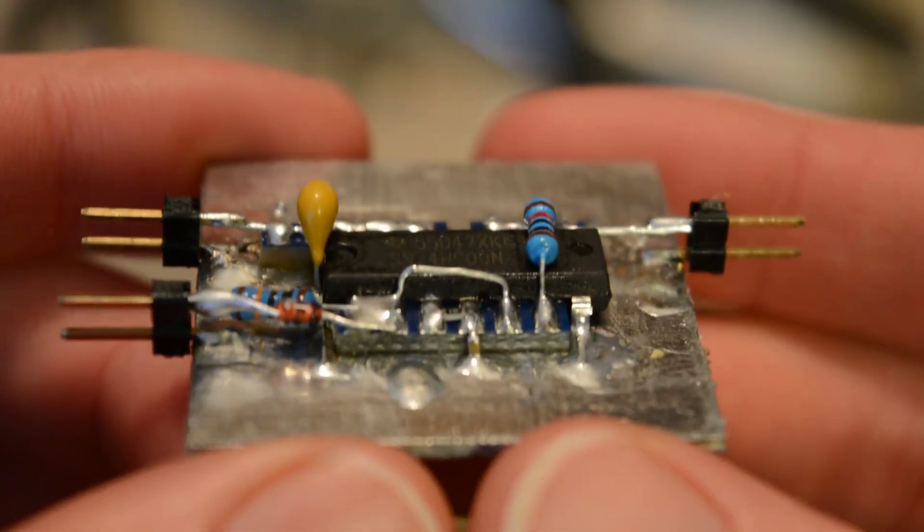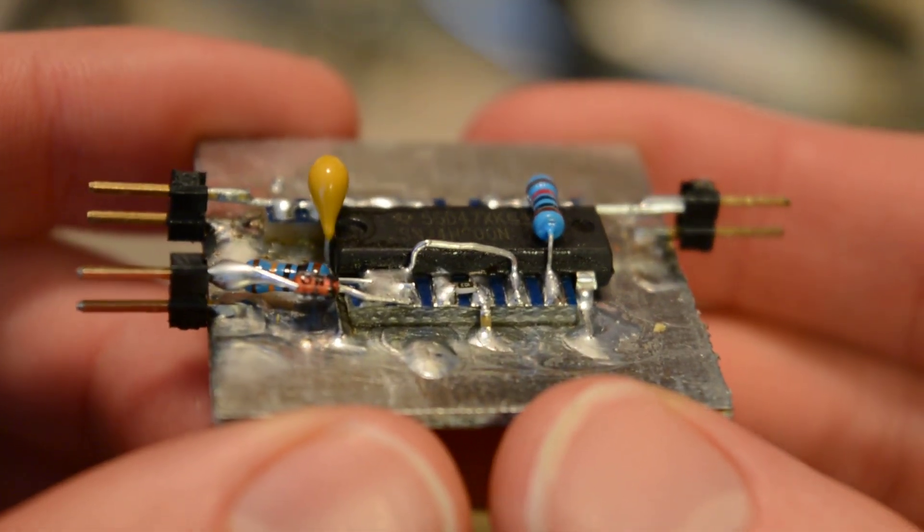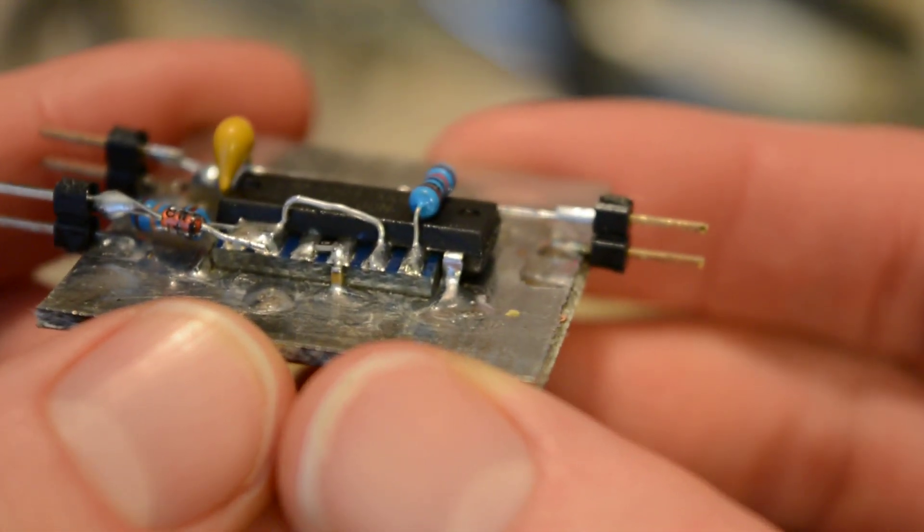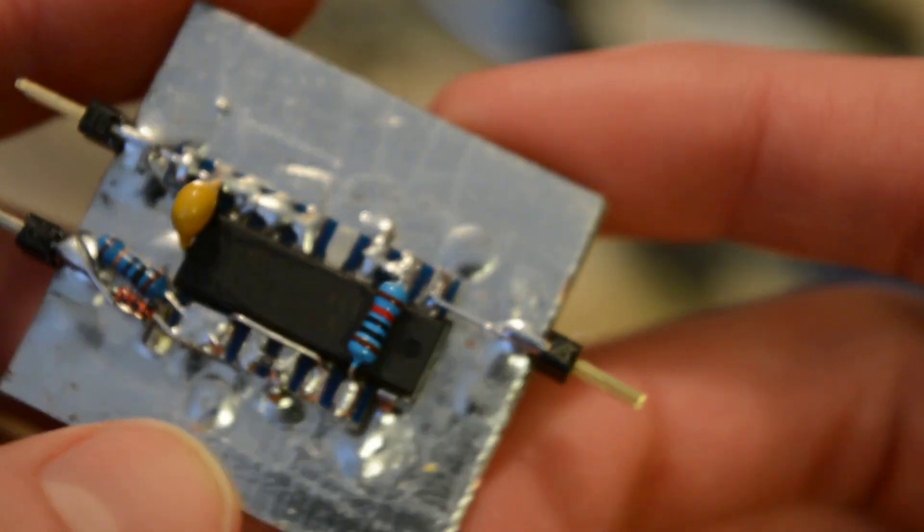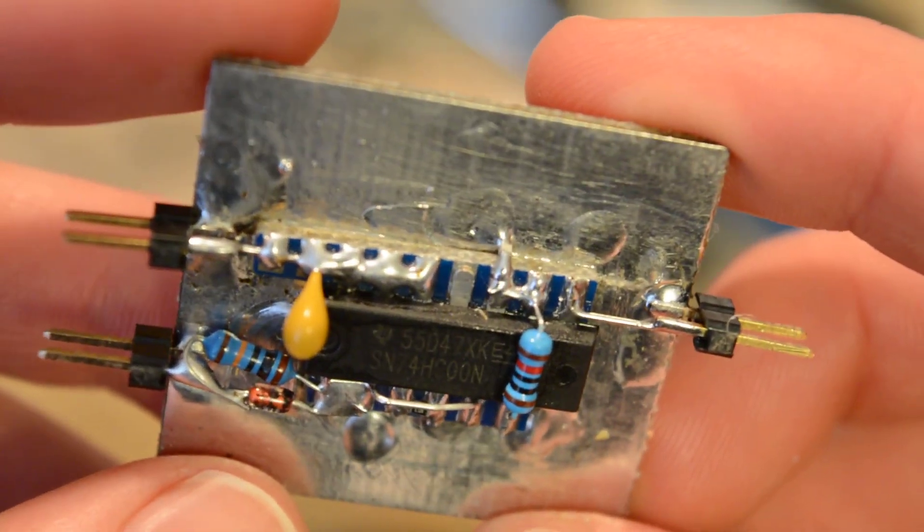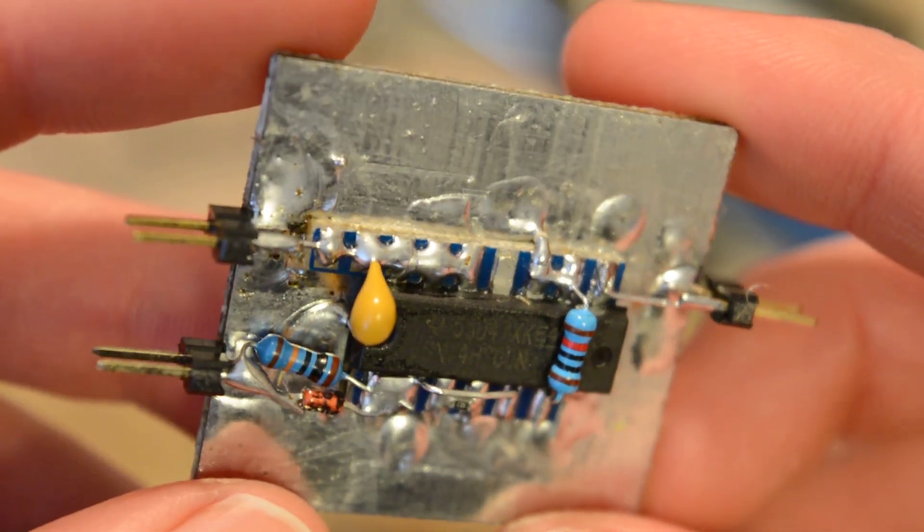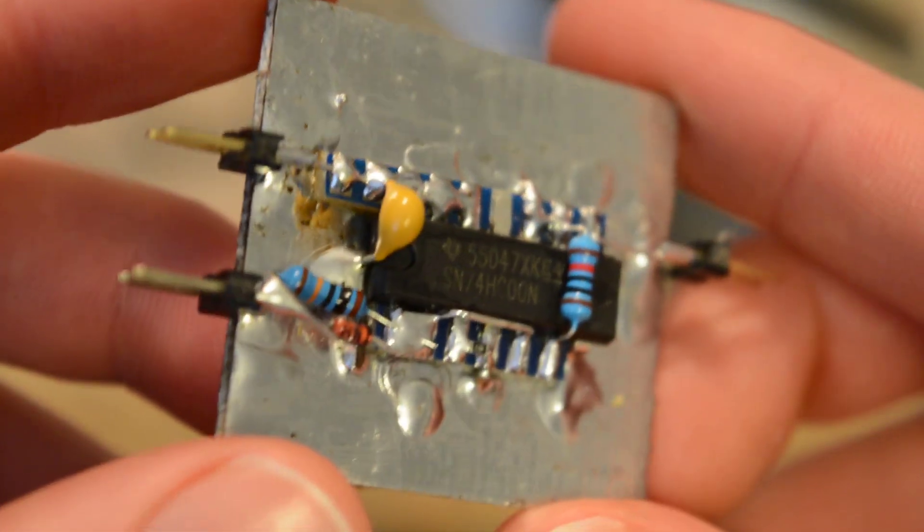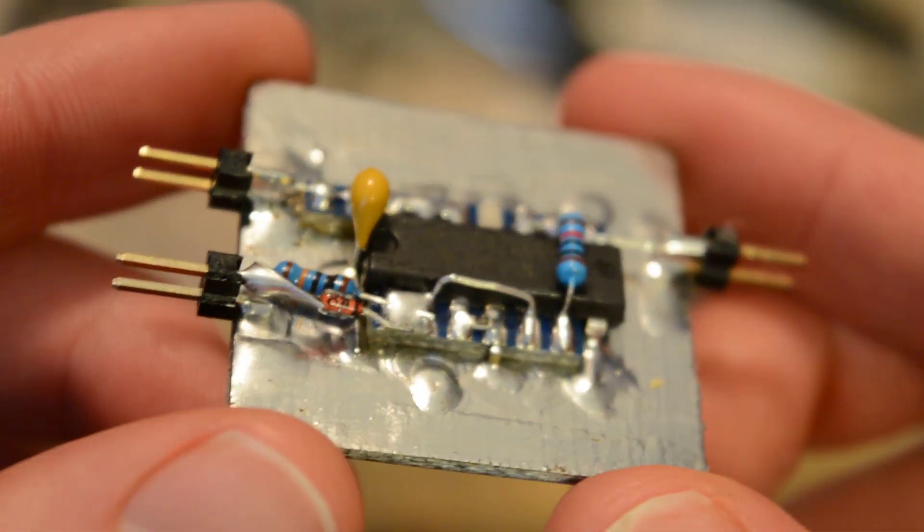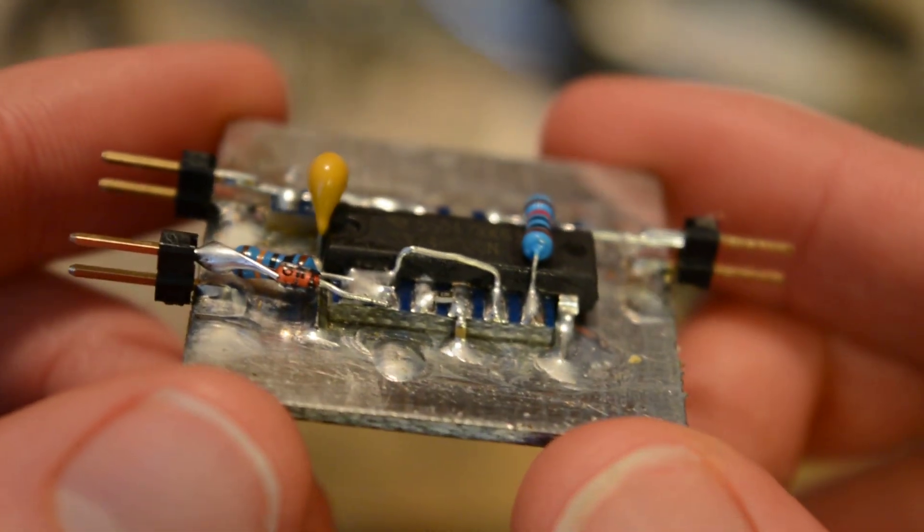So I think what I'll end up doing is migrating this design onto something else. One thing that you can do is you can solder together your circuit on top of a piece of copper clad fiberglass, which is what I have here. And these work pretty good. A lot of those parasitic capacitances can be eliminated, particularly between pins.